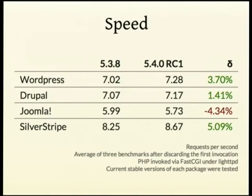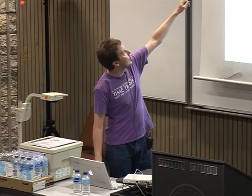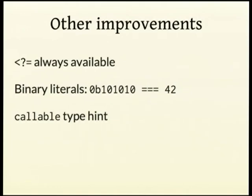PHP 5.4 is a bit quicker — I haven't had time to rerun the benchmarks but it's about the same on the current RC. Most frameworks should be a few percent faster, most code should be a few percent faster — you get this for free without doing anything. You will note there is a red delta for Joomla — the reason for that is because Joomla now generates a truly ridiculous number of deprecation warnings, something like 2,000 warnings on just the default home page of a default install, and the slow path when running PHP code is the error code. Other improvements: the short open echo tag is always available, you get binary literals, and you get a callable type hint which works exactly like the array type hint just for closures and callables.